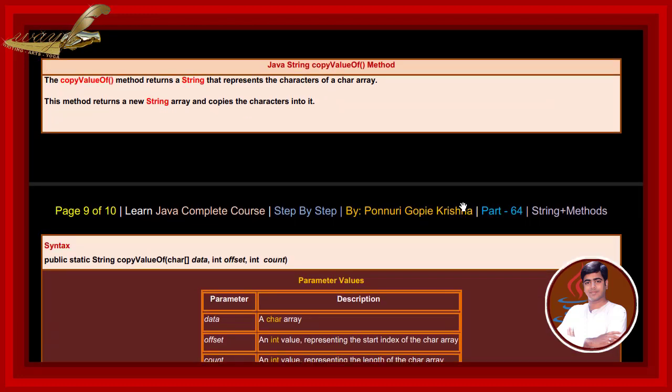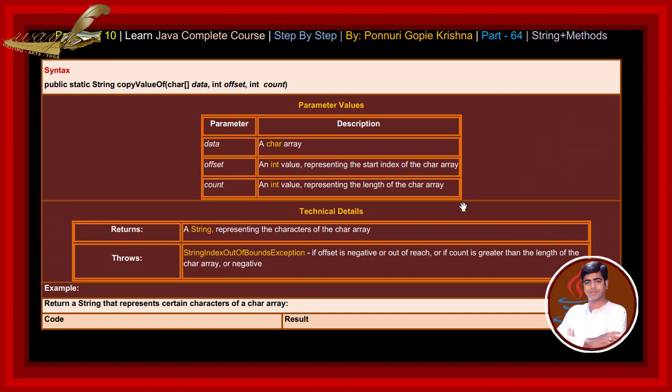Java string copyValueOf method. The copyValueOf method returns a string that represents the characters of a char array. This method returns a new string array and copies the characters into it. See the syntax: public static String copyValueOf(char[] data, int offset, int count). Parameters: data is a character array; offset is an int value representing the start index of the character array; count is an int value representing the length of the character array.